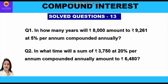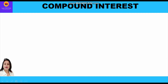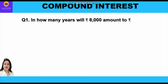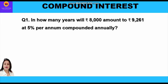Let's start with the first question. In how many years will rupees 8000 amount to rupees 9261 at 5% per annum compounded annually? They are asking us to find in how many years rupees 8000 — that is our principal — will amount to rupees 9261 — that is our amount — at 5% per annum, compounded annually.